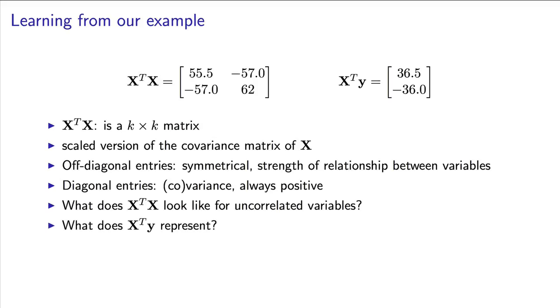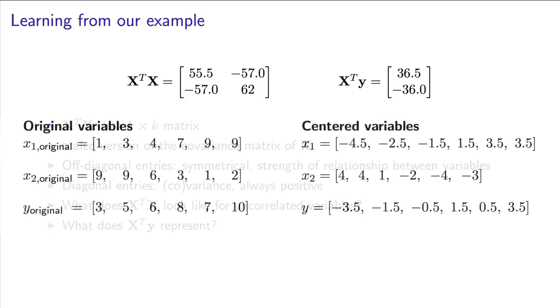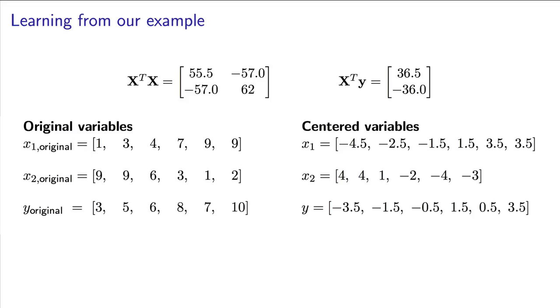Now, if X transpose X represents variances and covariances, what do you think the entries in X transpose Y represent? If you guess that it's the covariance of the entries of X with Y, you're right. The first entry in the X transpose Y result is the covariance of variable X1 with Y, and the second entry is the covariance of X2 with Y. Now take a look at the signs. Do they match your expectations, what you wrote down earlier? Look back at the raw data and make sure at least that the sign information matches your expectation.